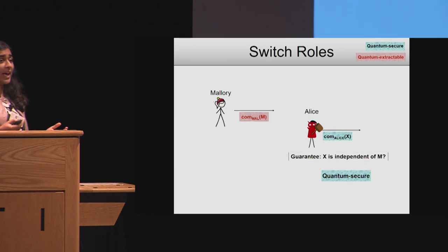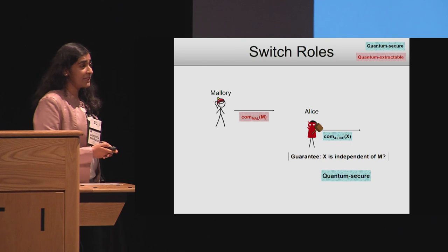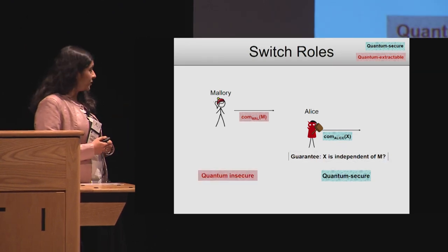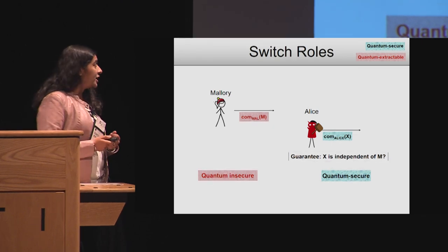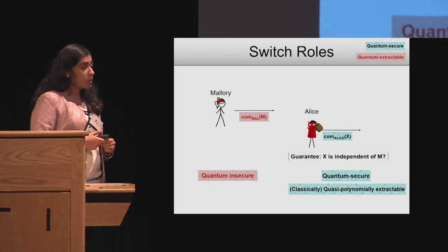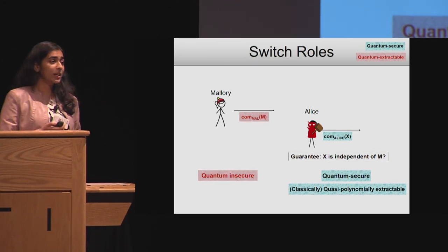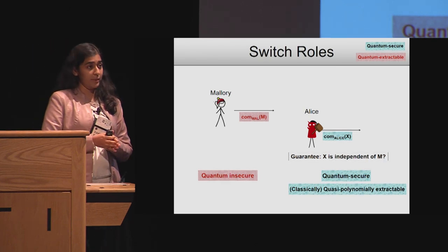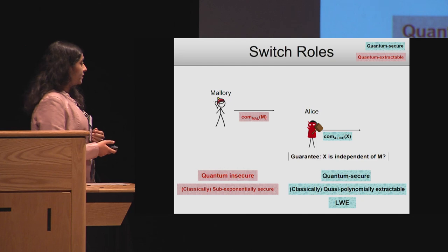We will rely on complexity leveraging. We will take Alice's commitment — which is quantum secure — and in addition make it quasi-polynomially extractable in classical quasi-polynomial time. This can be done by relying on the LWE assumption.